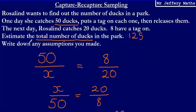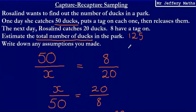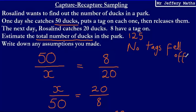We're also asked to write down any assumptions that we've made. This working assumes that no tags had fallen off. It would also assume that there had been no new arrivals to the population — so no new ducks born — and also that none of the ducks had died.